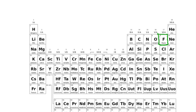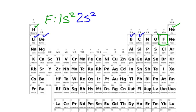Let's try our first example with fluorine. I'll write its chemical symbol F with a colon, and then count from the top left corner of the periodic table: 1s2, then 2s2, and then 2p1, 2p2, 2p3, 2p4, 2p5 — and we landed on fluorine, so we're done. So 2 plus 2 plus 5 equals 9 total electrons.